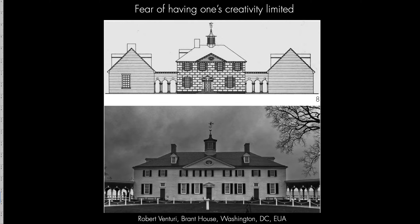Even when the objective is to build an exact replica — a commission rarely accepted by architects, who are usually interested in creating their own interpretation — it leads to a unique result. It is well known that a former Robert Venturi client, for whom he had built several houses, asked him to build a replica of Mount Vernon, the house of George Washington near Washington DC. Venturi designed a very personal version, full of irony and distortions, that was not accepted by the client, who later found another professional who built the desired replica.